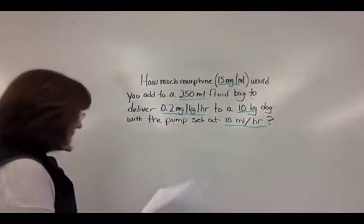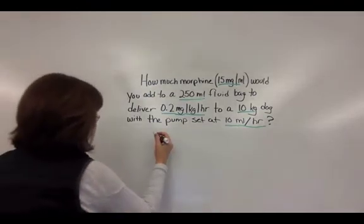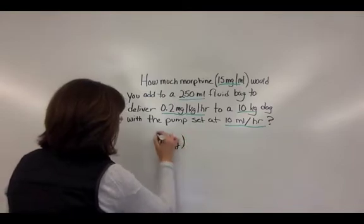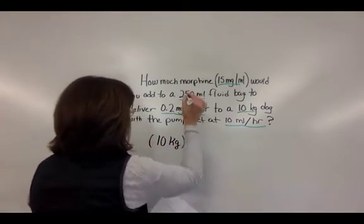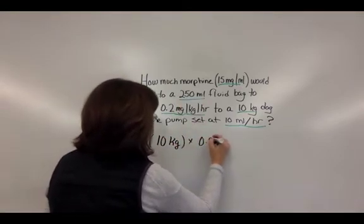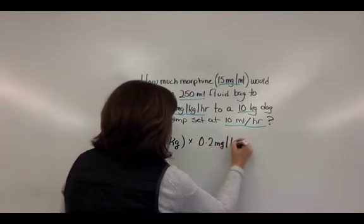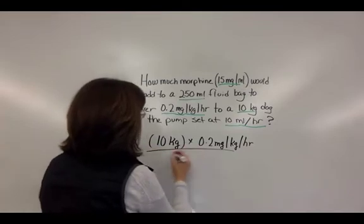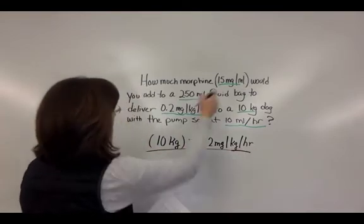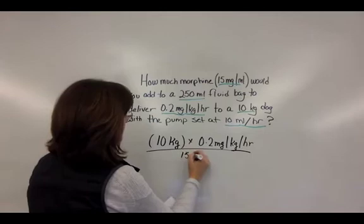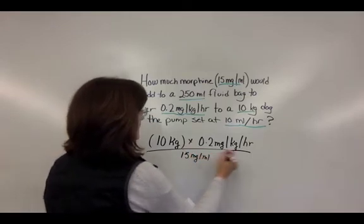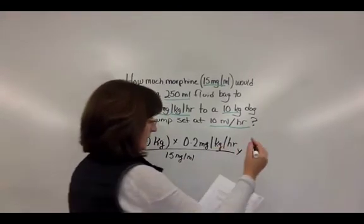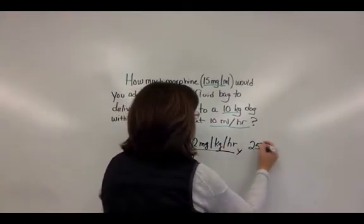Let's put them into our formula: 10 kilograms times the dosage rate of 0.2 mcg/kg/hour, divided by the drug concentration of 15 mcg/mL, and then we multiply that by the total fluid volume.